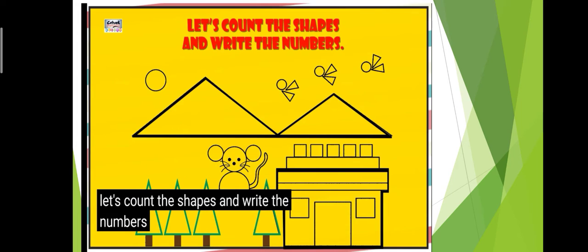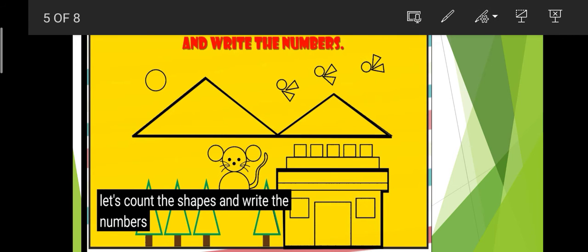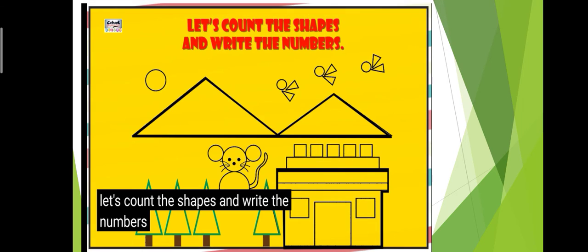So let's count the shapes and write the numbers. For example, how many triangles are there? One, two, three, four, five, six, seven, eight, nine, ten, eleven, twelve, thirteen, fourteen. We have fourteen triangles. How many squares? One, two, three, four, five, six, seven. How many circles? One, two, three, four, five, seven.